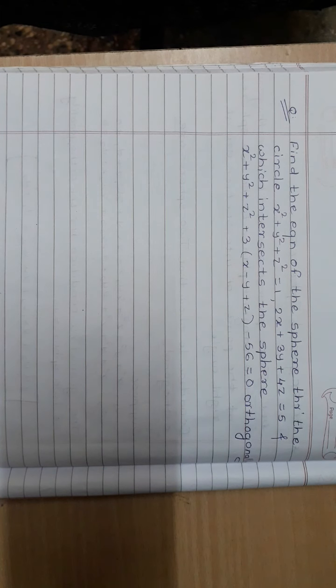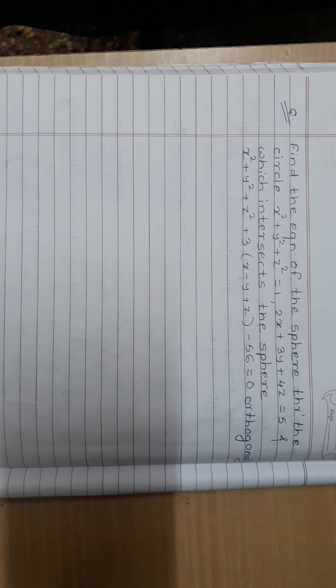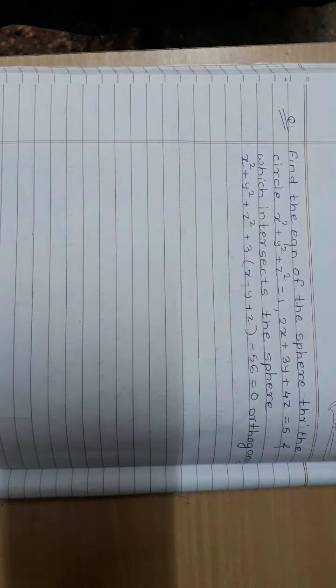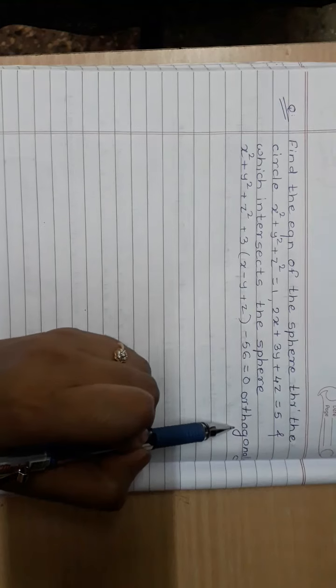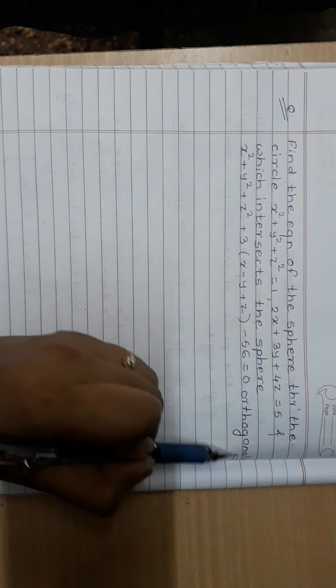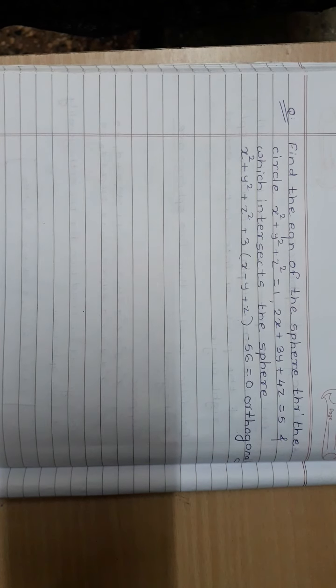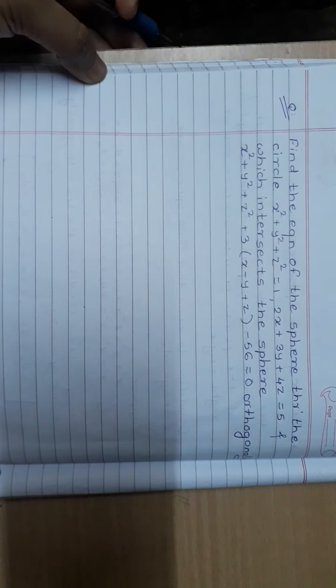Hello everyone. In the last session we solved some examples based on spheres. My next example is: find the equation of a sphere through a given circle which intersects a given sphere orthogonally. For orthogonality, the condition is 2u1u2 + 2v1v2 + 2w1w2 = d1 + d2. I hope everyone remembers this condition. So let's start solving this.